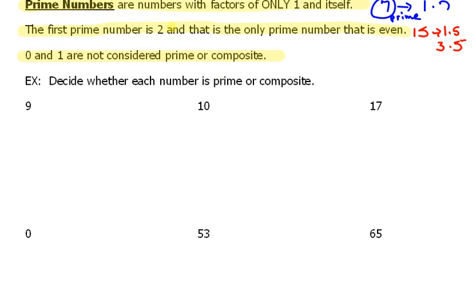We're going to decide whether each of these numbers is prime or composite. The first one, 9, is a composite number. Now the reason is because I can think of another factor of 9 that's not 1 times 9. And that would be 3 times 3. So this is composite.